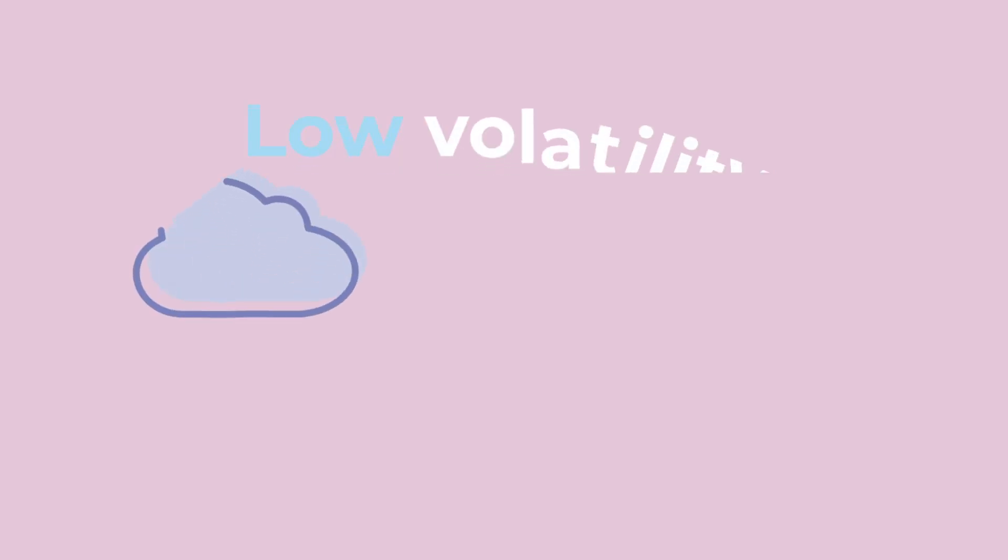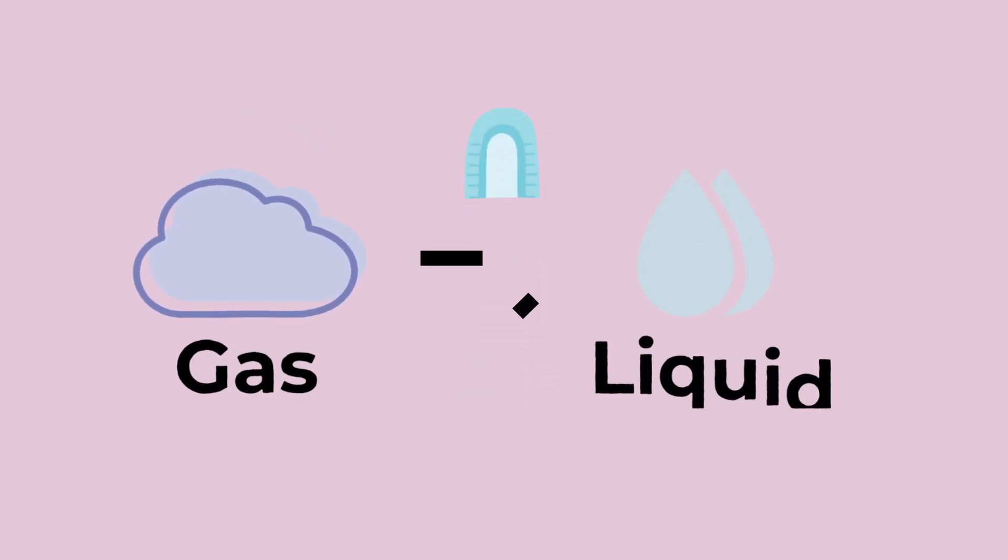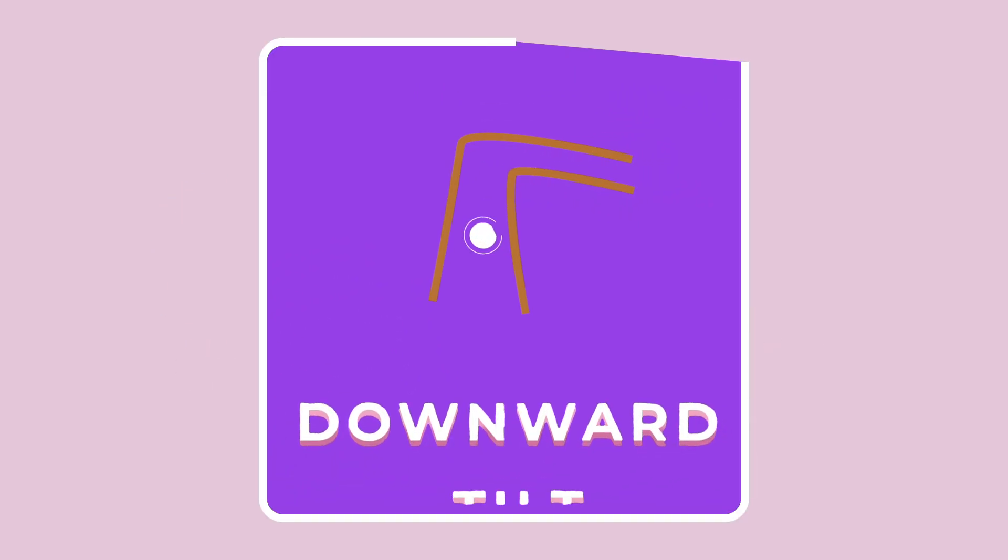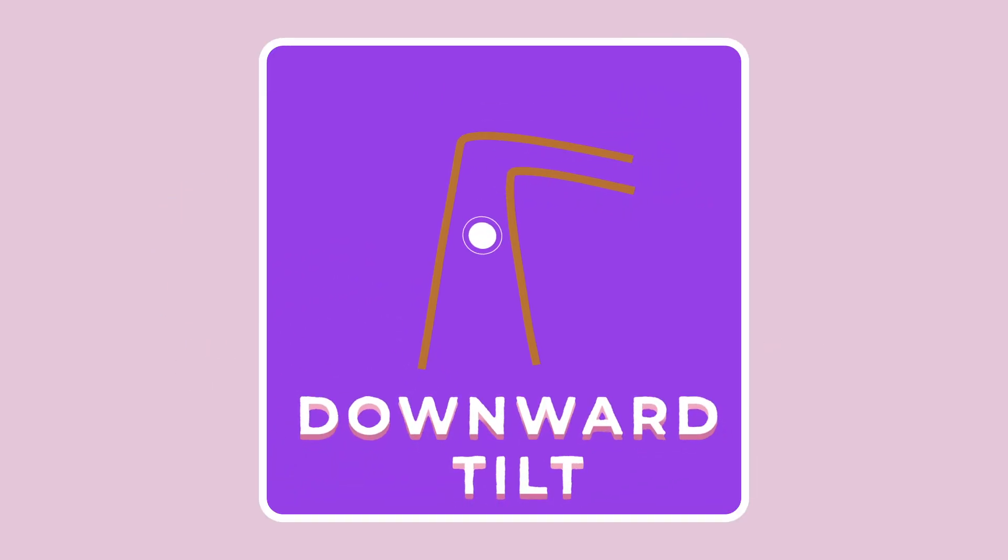That means that when the low volatility gas gets to the lyne arm, the cooler temperature in that area will cause the gas to transform back into a liquid. So if the lyne arm is tilted downward, the liquid will naturally move down the lyne arm and be collected as part of the distillate.